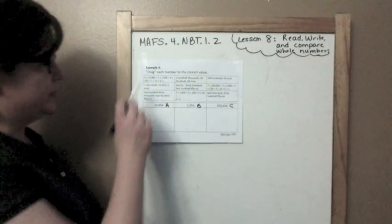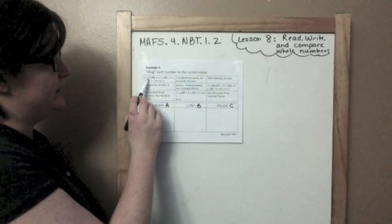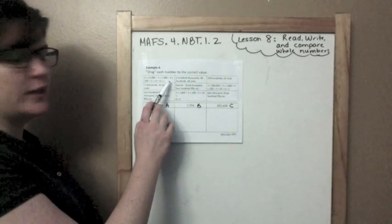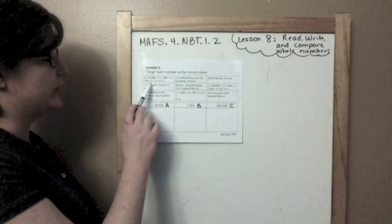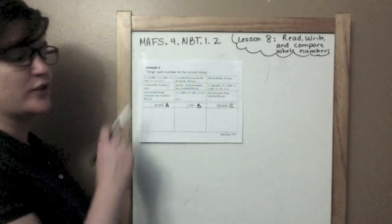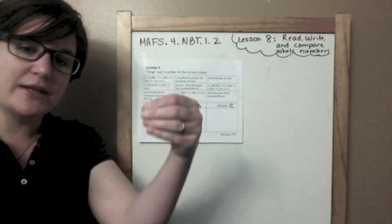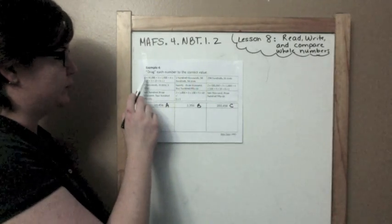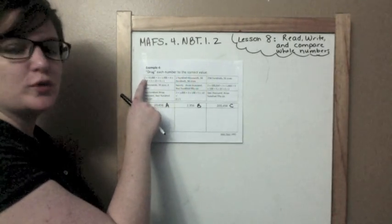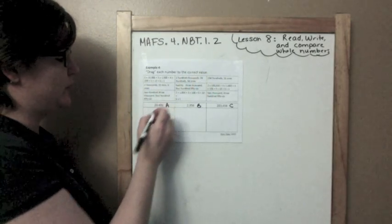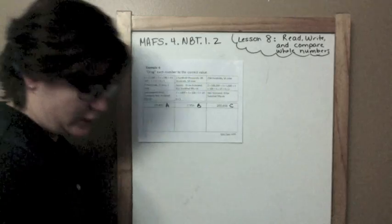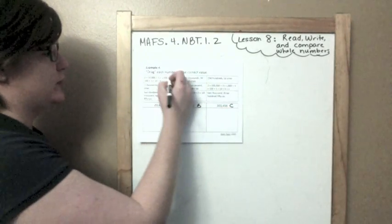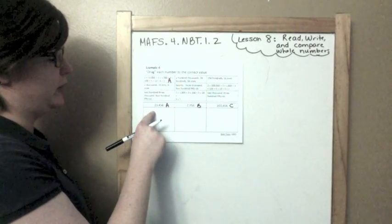Let's look at this one. 2 times 10,000 plus 3 times 1,000 plus 4 times 100 plus 5 times 10 plus 6 times 1. That's written in expanded form — it's where you're expanding out the number like a rubber band. So, 2 times 10,000 means I need 2 in the 10,000s place. This one has a 2 in the 10,000s place, this one has a 2 in the 1,000s place, and this one has a 2 in the 100,000s place. So, A would be the right one.